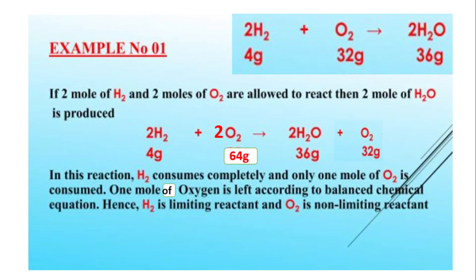Pehli example: if we take 2 moles of hydrogen and treat them with 2 moles of oxygen, you will get 2 moles of water. Aap 2 mol hydrogen le rahe hain yaani 4g hydrogen, aur 2 mol oxygen yaani 64g oxygen, toh 2 mol water yaani 36 gram water ban raha hai. Is case mein oxygen is left unreacted — 1 mol oxygen (32 gram) unreacted padi hai, kyunki hydrogen completely consume ho chuki hai. Isliye hydrogen ko kahenge limiting reactant aur oxygen ko kahenge excess reactant.